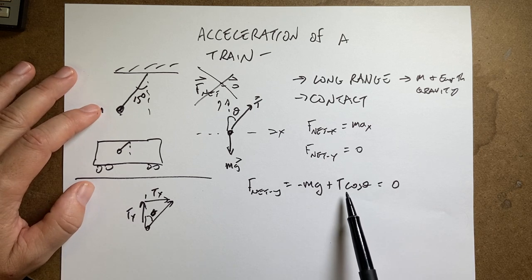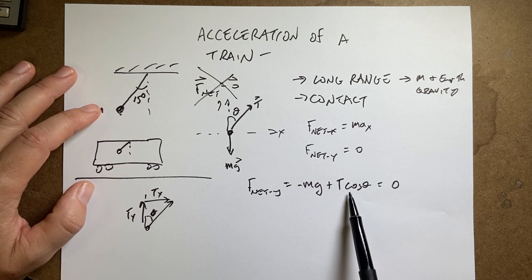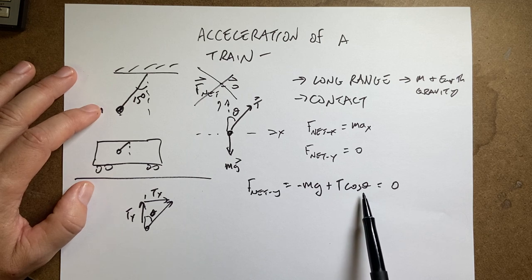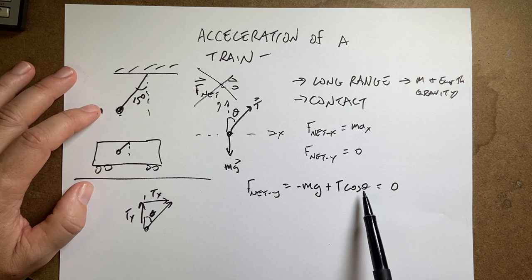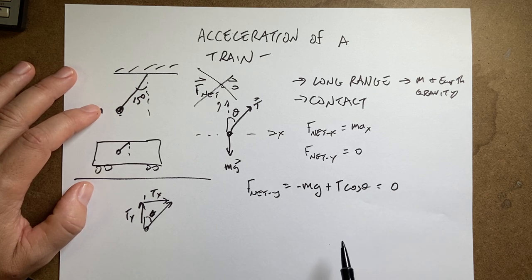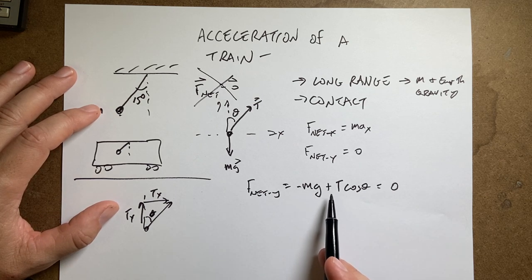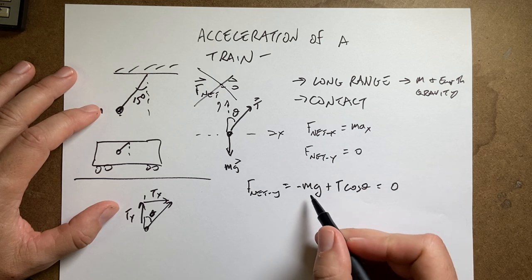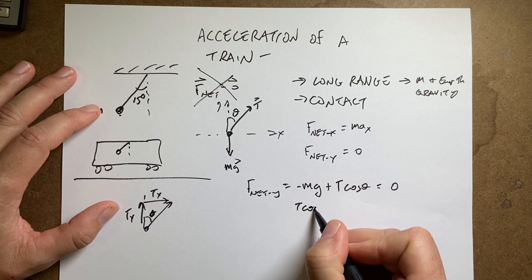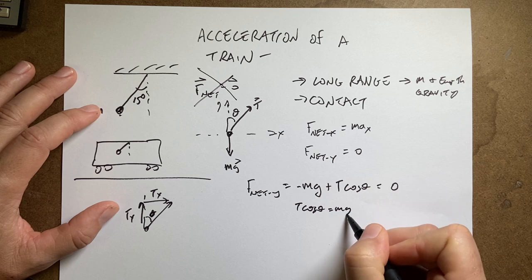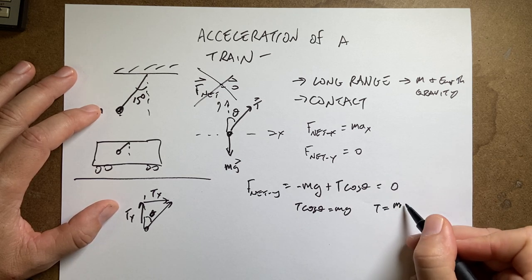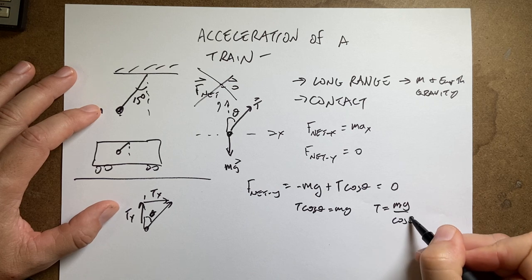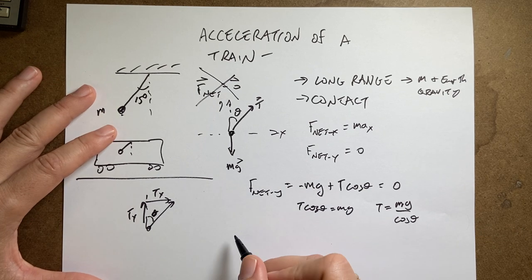Now it's important to realize that when we find components of vectors, you have to actually look at this situation. Don't say, oh, sine is y, cosine is x. That's not true. But right here I can solve for t. So I'm going to add mg to both sides. I get t cosine theta equals mg. Divide by cosine theta. I get t equals mg over cosine theta. Now let's look at the x direction.